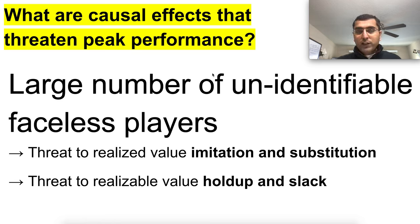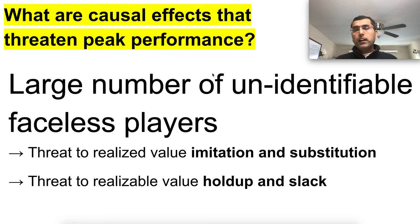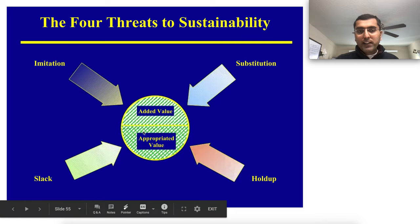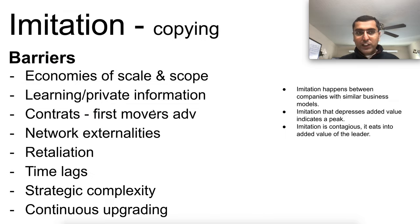So far we've seen identifiable small players competing — now what about faceless, unidentifiable players? There are causal performance reasons where they can eat into your competitive position: imitation, substitution, hold-up, and slack. Imitation and substitution eat into your already-added value — the value you've realized. Slack and hold-up eat into your appropriated value — your realizable value — the value that's possible for you to claim but you're not capturing.